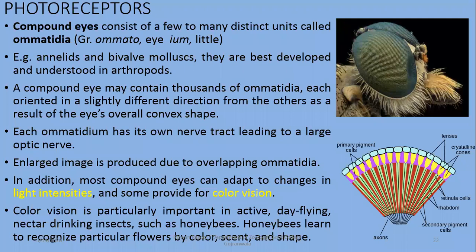Here is another example of photoreceptors in invertebrates: compound eyes. Compound eyes consist of many distinct units called omatidia — the word omatidia refers to 'little eyes.' For example, annelids, bivalves, and molluscs have well-developed and understood eyes, as well as arthropods.